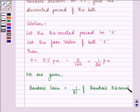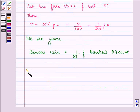We know that bankers gain is equal to bankers discount minus true discount. So we have bankers discount minus true discount equal to 1 by 81 of bankers discount. Now here BD is bankers discount and TD is true discount.